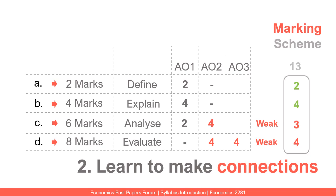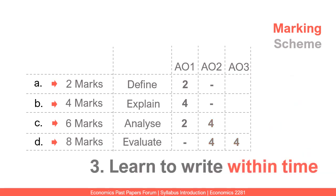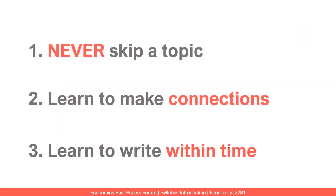One key ability you need to develop is making connections between topics. The third and probably most important skill is writing within time. All the concepts you explain must be delivered within the time available, and that is only possible with a lot of practice. The three key things are: never skip a topic, learn to make connections, and learn to write within time.